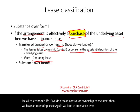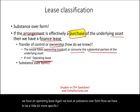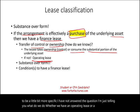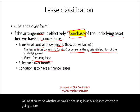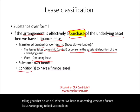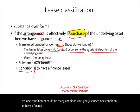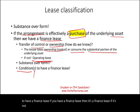We have to be a little more specific. We're going to look at conditions — actually it's one condition out of five that's needed. You just need one condition to have a finance lease. If none of those conditions are met, it's going to be an operating lease. You just need one of the five.